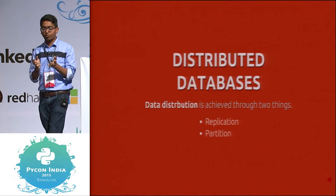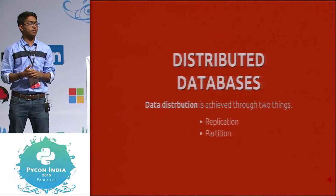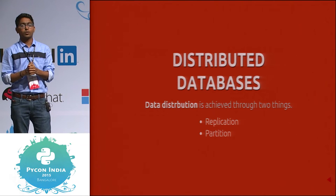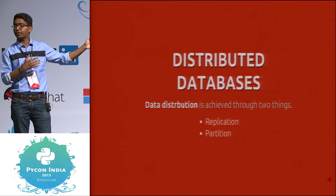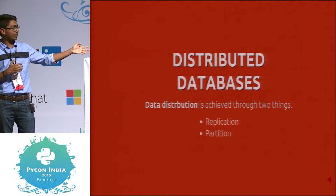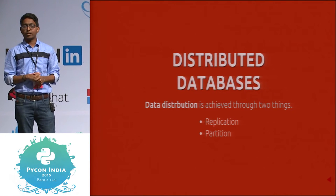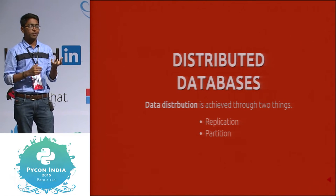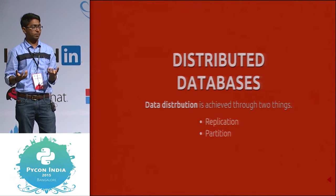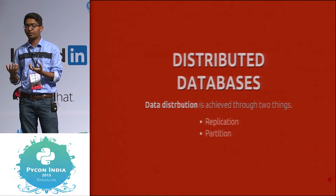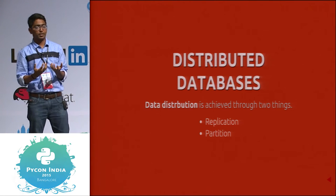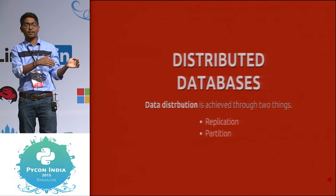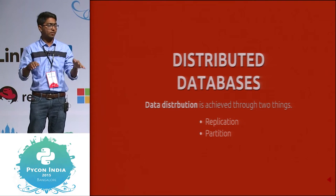How many of you work with distributed databases? The two main characteristics of distributed databases are replication and partition. Replication means you have one set of data and you want to take a copy — a backup, an exact clone of it. Partition means cut it in half and place one half in one container and the other half in another place.